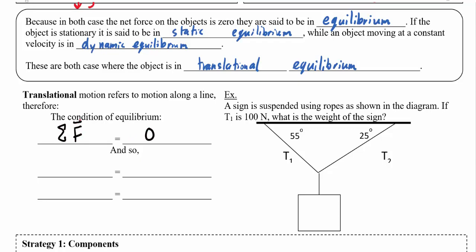The condition for translational equilibrium is that the sum of all forces has to be zero. Since forces are vectors, the x and y directions are independent. So the sum of all x forces must be zero and the sum of all y forces must be zero — basically no net force side to side and no net force up and down. These are our first two conditions for equilibrium. Next class we'll look at the third condition.